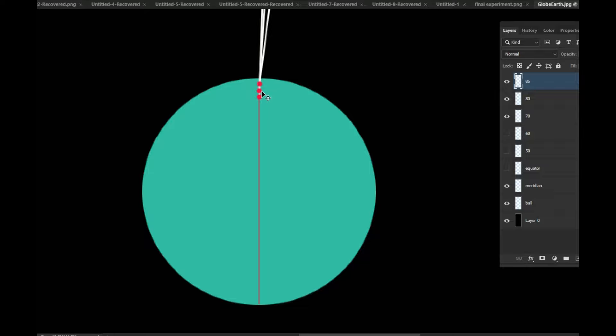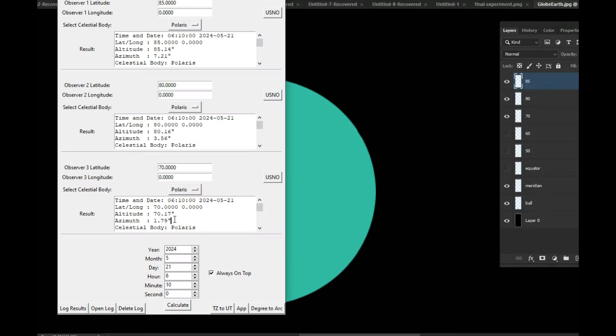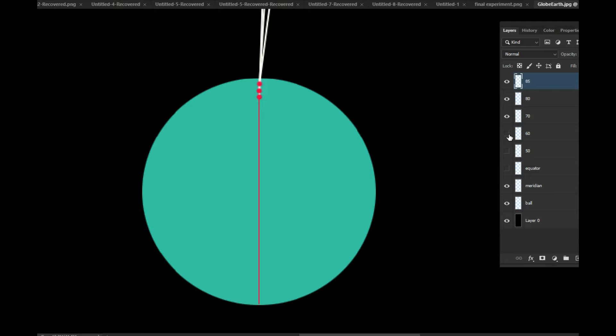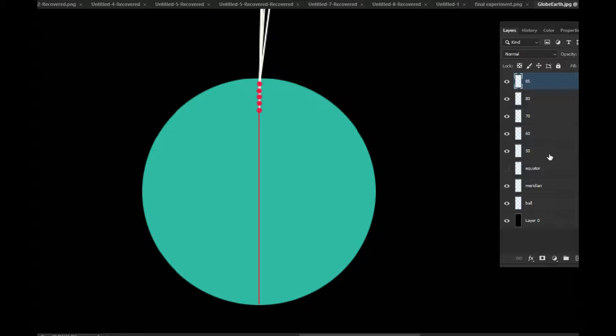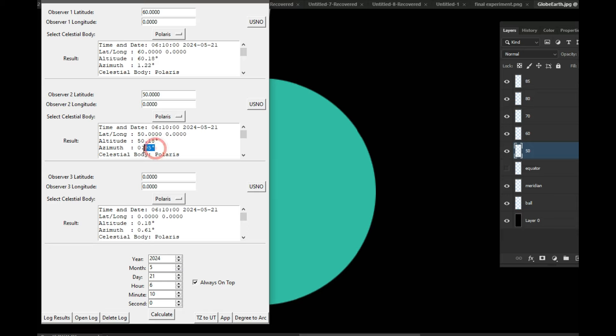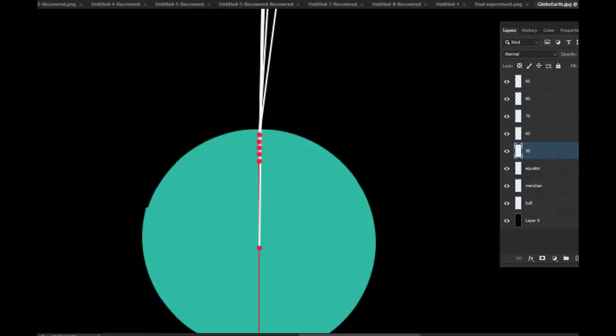60th latitude north had an angle of 1.22 degrees. And here the 50th latitude north had an angle of 0.95 degrees. And here at the equator, 0.61 degrees. So now let's see how that looks like.